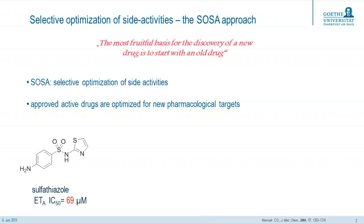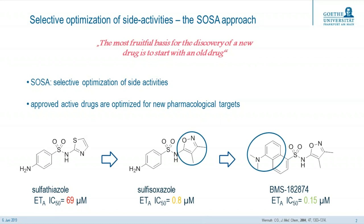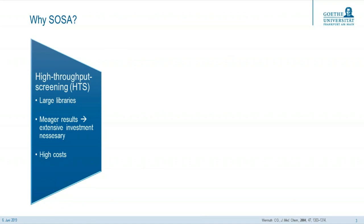I want to show you an example from the literature: the development of selective antagonists for the endothelin ETA receptors. They started from an in-house library. The antibacterial compound sulfathiazole was identified as a very weak antagonist for ETA. The systematic variation finally leads to the potent and very selective ligand BMS. You can see that only minor structural changes lead to a very high potent ligand.